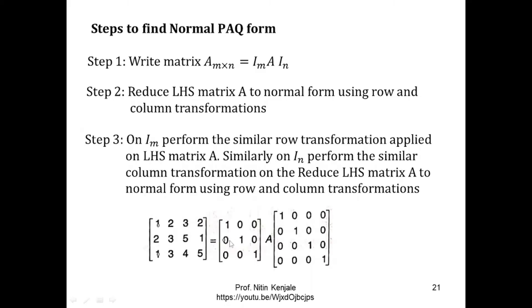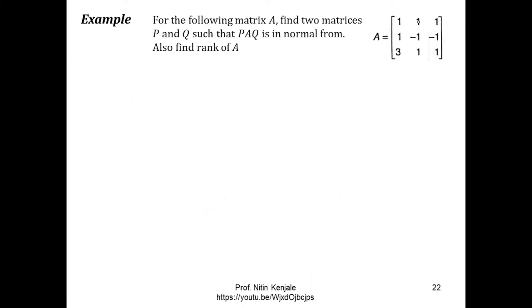In Step 3, on Im we will perform the similar row transformations applied on the LHS matrix A, and on In we will perform the similar column transformations that we applied on the LHS matrix A to reduce it to normal form. By the time matrix A is reduced to normal form, this first matrix reduces to another matrix P, whereas this third matrix reduces to another matrix Q. That is why we say that PAQ is in normal form. Now let me show you an example.